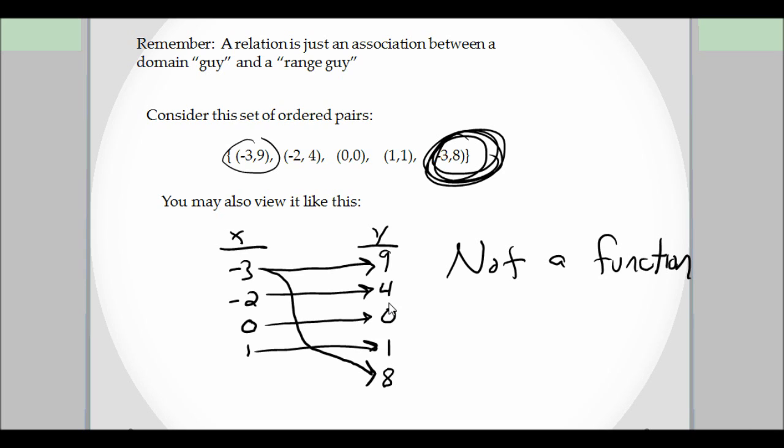So that's all you've got to do. Just check to see if there's an input that goes to more than one output. If you have something that goes to more than one output, or another way of saying it, goes to two different y values, then it's not a function.